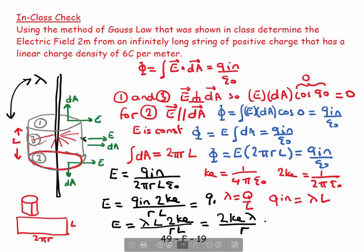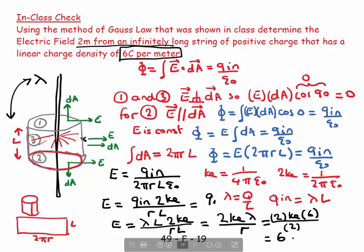And if I have numbers, then it's going to be 2ke, leave ke alone, lambda. It says 6 coulombs per meter. So, that's going to be 6 over r, the distance from the structures of the point of interest. And it says 2 meters from an infinitely long wire. So, that's going to be 2. So, this would equal 6ke newtons per coulomb meter squared. There's my answer.